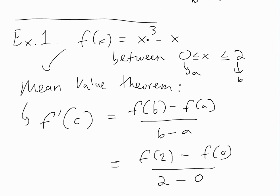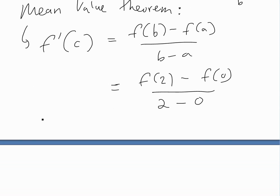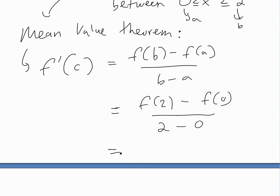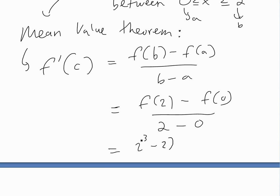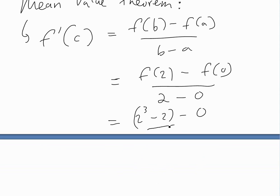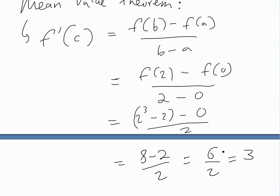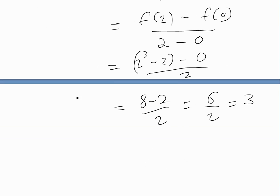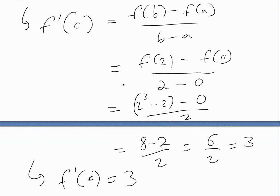If we put two into f(x): that's two cubed minus two, and f(0) is zero minus zero, which is zero. So we get eight minus two over two, which equals six over two, which equals three. So there's a number c between zero and two such that the derivative equals three — that's the average slope.